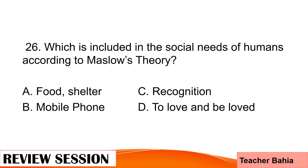Number 26. Which is included in the social needs of humans according to Maslow's theory? Is it A. Food shelter, B. Mobile phone, C. Recognition, or D. To love and be loved? The correct answer is letter D. To love and be loved.